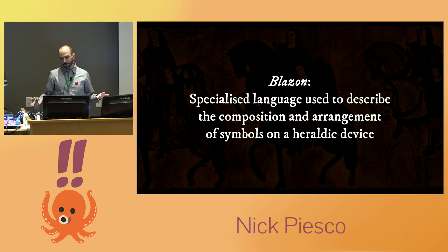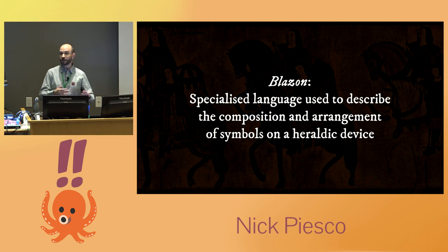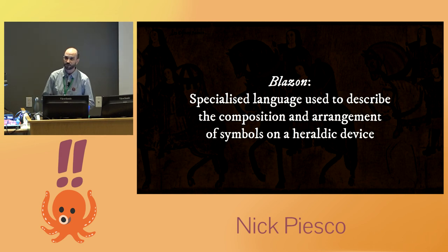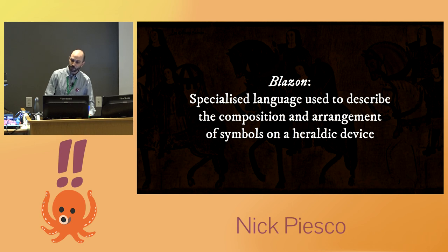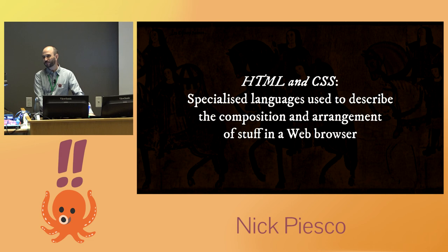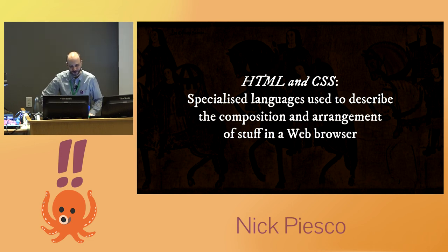Every coat of arms, back from the first ones written about in the 1200s down to the things that come out today, are described by the same language: Blazon. It's a specialized language used to describe the composition and arrangement of symbols on a heraldic device. In the web world, we have something similar — we have HTML and CSS, a specialized language used to describe the composition and arrangement of stuff inside a web browser.